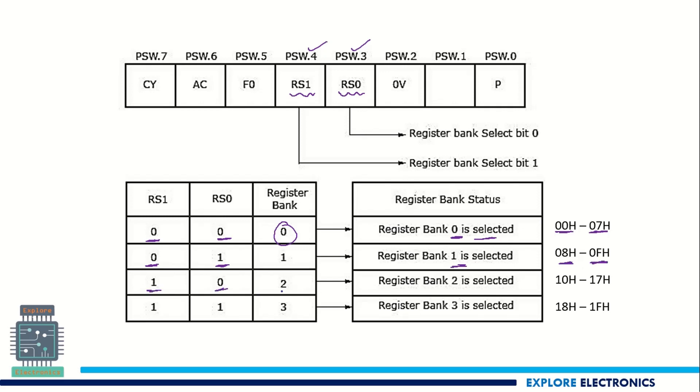Similarly 10 will be for the second register bank. Register bank 2 is selected, 10H to 17H. Similarly 11 indicating the last bank, that is the fourth bank, bank 3. Bank 3 is selected and 18H to 1FH is the address. So these two indicate which bank is selected depending on the value of the third and fourth bit in the PSW register, we are going to set the banks.